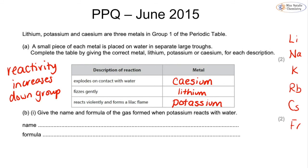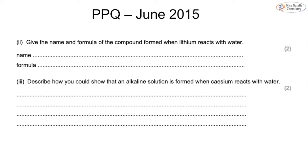For part b, give the name and formula of the gas formed when potassium reacts with water. When any alkali metal reacts with water it produces the metal hydroxide and hydrogen. The formula for hydrogen is H₂ — remember hydrogen is diatomic, so make sure you include the 2 or you will lose a mark. For part two, the name and formula of the compound formed when lithium reacts with water: that is lithium hydroxide with formula LiOH.